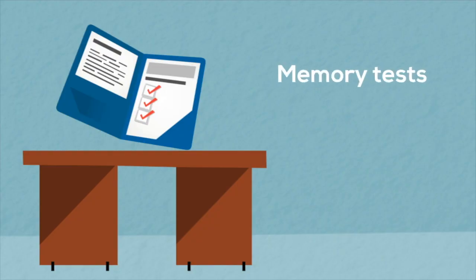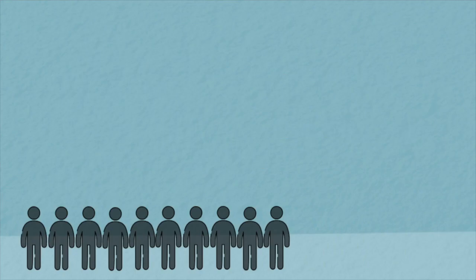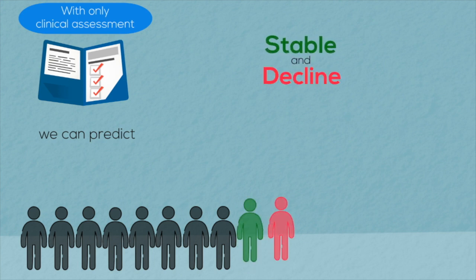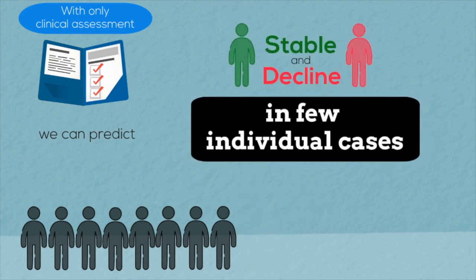Say we want to predict the symptomatic progression of all of these individuals. In a clinic, we usually begin with memory and cognitive assessments that can tell us about the current symptom severity of any given individual. In certain extreme cases, as shown by the green and red figures, these assessments can potentially be used for future predictions as well. But typically, it is not an accurate prognostic tool for the majority of individuals.